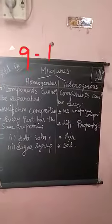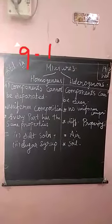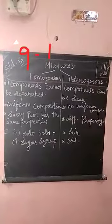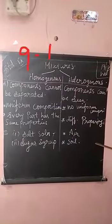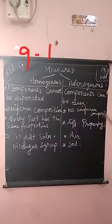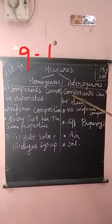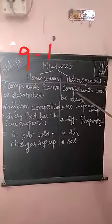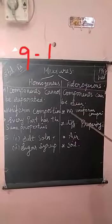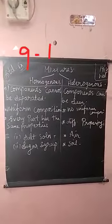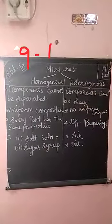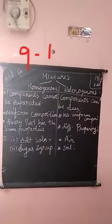Now coming to heterogeneous mixture — the example is sand and water solution. When you are seeing that mixture, you can find out this is sand and this is water. So heterogeneous means its components can be seen through your naked eye. This is the sand component and this is water — you can see. The components can be seen through your eye, and there is no uniform composition — you can differentiate the mixture.